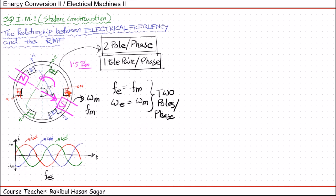Now if you want to increase the speed of this rotating magnetic field, you need to increase the frequency of the supply current. Generally we cannot change this because it is provided by our electrical suppliers, so the supply frequency remains constant. Therefore the speed of this rotating magnetic field remains constant for a particular mechanical stator configuration.